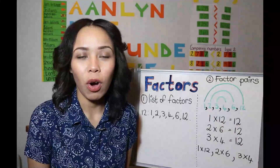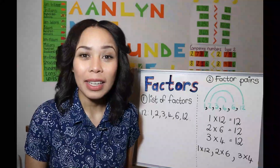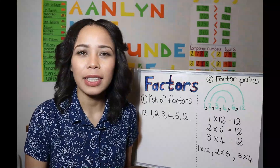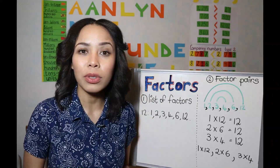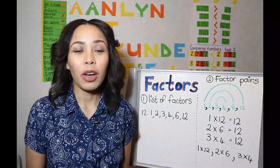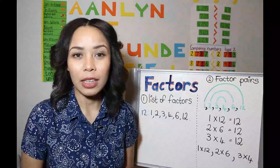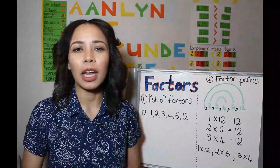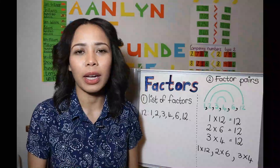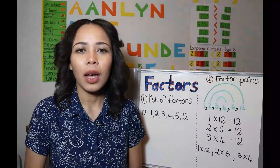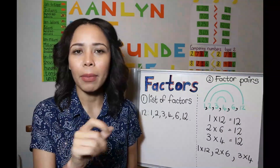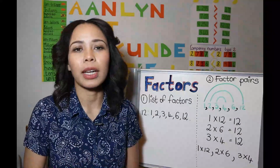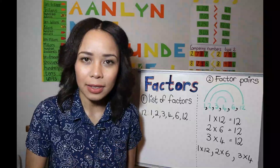So now we're going to move on to what are factors. The factors of a number are all the numbers that can divide into that number without a remainder. There are two ways in which you can write down factors: you can either list them with a comma in between the numbers, like you list anything when you're writing in English, or you can write down factor pairs.